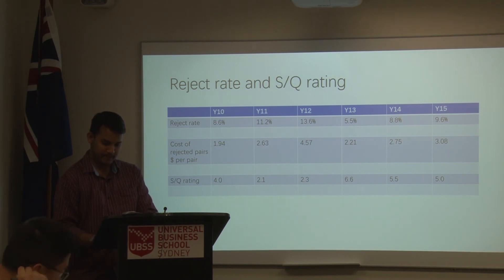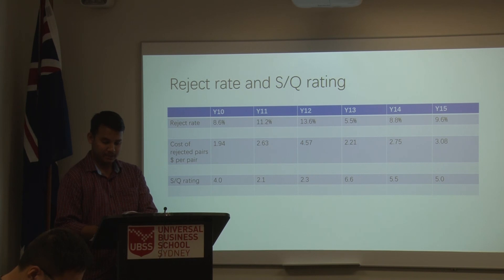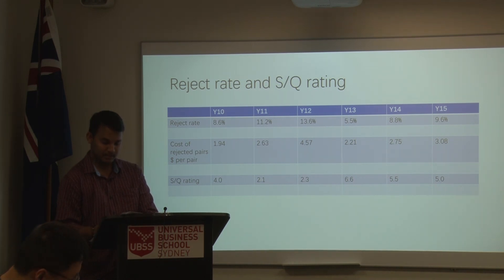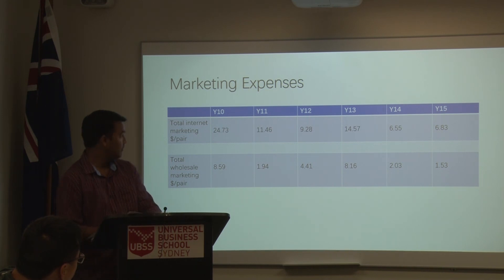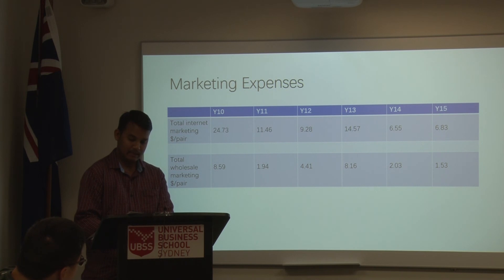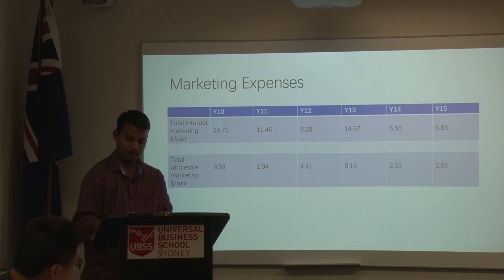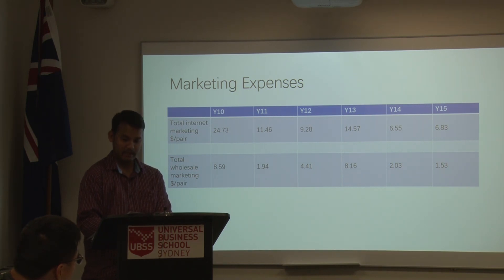Coming to the rejection rate — we had a pretty high rate in year 12, at 13.6%. We changed our strategy to differentiation and sold fewer pairs in certain regions, ending up with a 9.6% rejection rate. The cost per rejection also ended up at 3.08. The SQ rating started with 4 and ended with 5 in year 15. Moving on to marketing expenses — in year 10 we invested 24.7 dollars per pair, but moving on to year 15 we invested only 6.83 dollars per pair. Total wholesale marketing per pair in year 10 was 8.59 dollars and ended up with less investment in year 15 at 1.53 dollars.